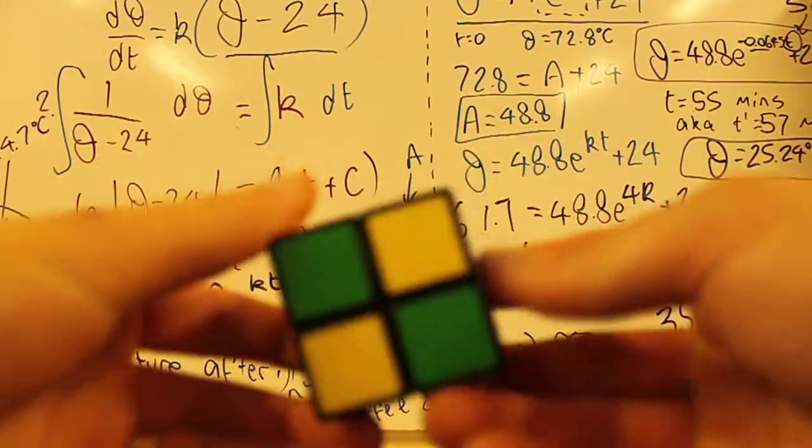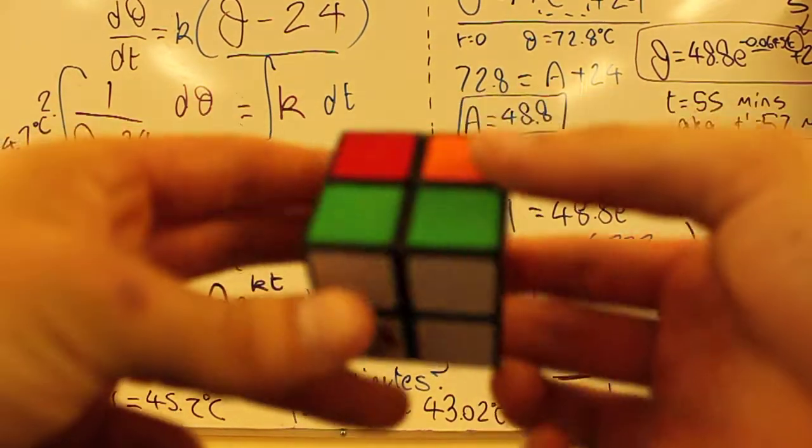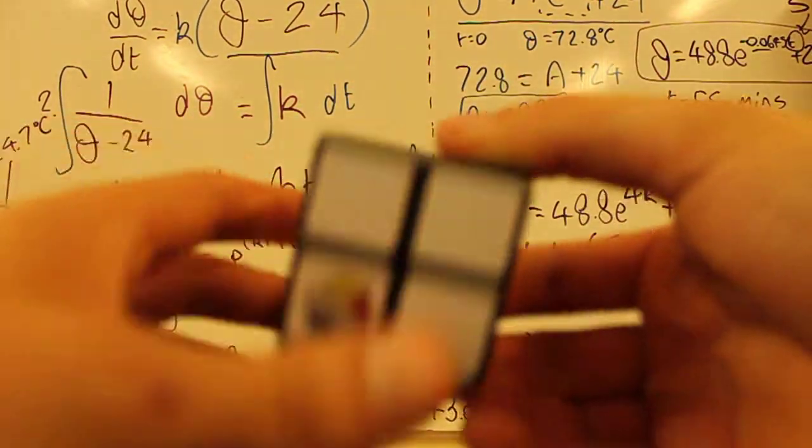Hi guys, I've got a 2x2 Rubik's Cube. I've already got one side in place, so the white side is fully complete.